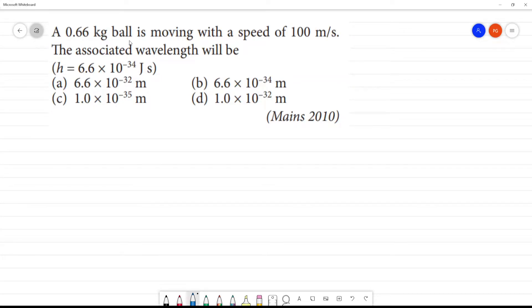Here 0.66 kg ball is moving with a speed of 100 m per second. The associated wavelength will be: lambda is equal to h by mv.